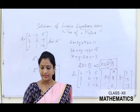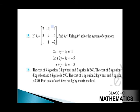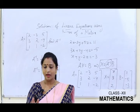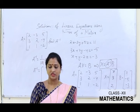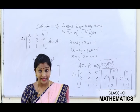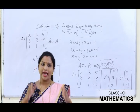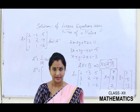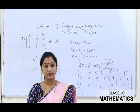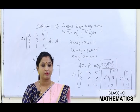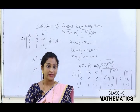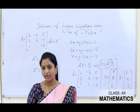Question 16 is a word problem. As in linear equations, you frame three equations from the problem — for example, let x = price of 1 kg onion, y = price of 1 kg wheat, z = price of 1 kg rice — and then use the same matrix method procedure to find the values of x, y, and z. Practice these questions at home. I hope this session is clear. Keep learning. Thank you.